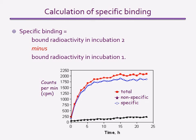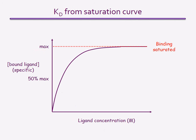Measurements of specific binding are made when binding has reached equilibrium — after 10 minutes in this example. Measurements of specific binding can then be plotted as a function of the concentration of the radio-labeled ligand. This is known as a saturation plot, as it shows the ligand concentrations at which binding saturates or is maximum. From this plot, the dissociation constant can be interpolated as the concentration of the ligand at which 50% is bound to the target.